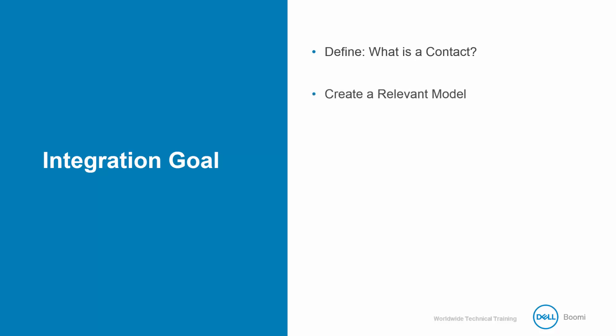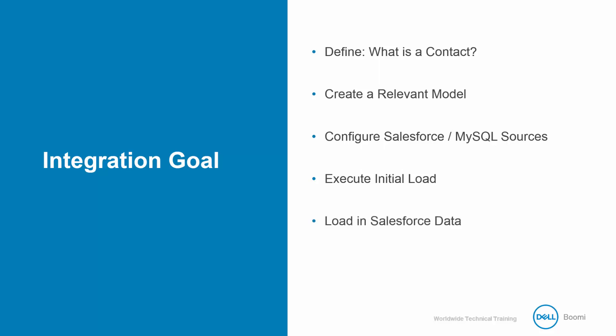Next, we will create a relevant model consisting of the fields identified in Step 1. We will then configure the Salesforce and MySQL sources and identify their level of contribution to the newly defined contact domain — for now, think of the contact domain as the model. At this stage, we will simply prepare the ID of the source that we will reference later in the class. Then we will execute the initial load from our MySQL source into the contact domain, giving us our first golden records to interact with. We will then load in our Salesforce data to see the changes and restrictions we put upon that source. And finally, we will add additional features to increase the quality of our data and filtering capabilities, including data quality steps and tags.